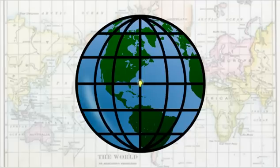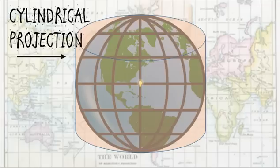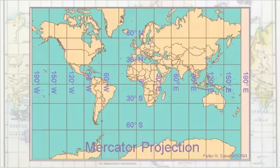Next, we'll place a light in the center of our sphere. The shadows of the graticule and features of the Earth are now being projected. To project it onto paper, let's put a paper cylinder around the Earth. Now we have what is called a cylindrical projection. Now imagine those projected shadows and features sticking to the paper. If we unroll the paper, we get something like this.